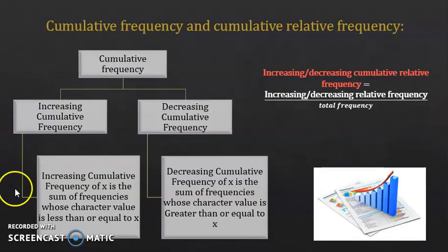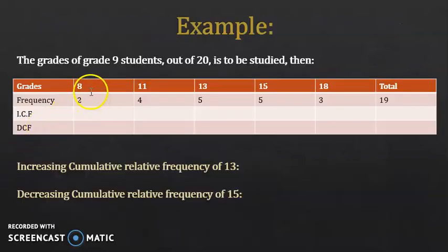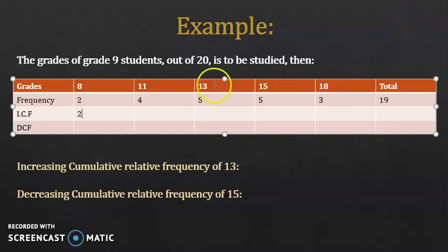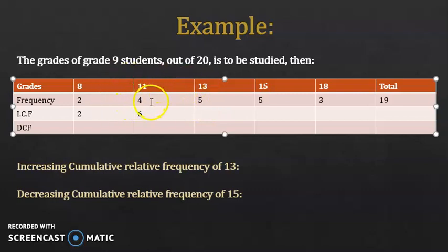For the increasing cumulative frequency: the increasing cumulative frequency of 8 is just 2, since no grades are below 8. For 11, it's 4 plus 2, giving 6. For 13, it's 5 plus 4 plus 2, giving 11. For 15, it's 5 plus 5 plus 4 plus 2, giving 16. For 18, it's 3 plus 5 plus 5 plus 4 plus 2, giving 19.